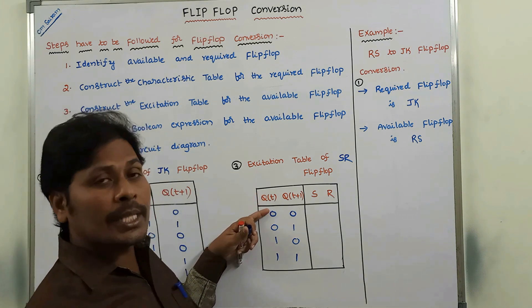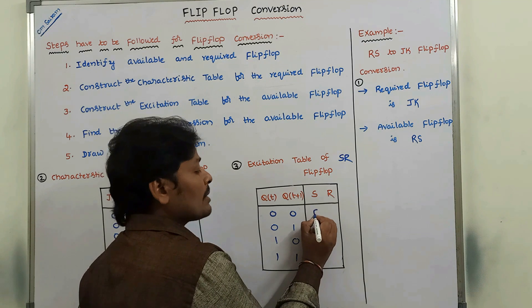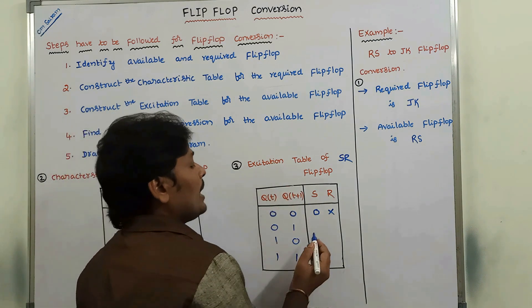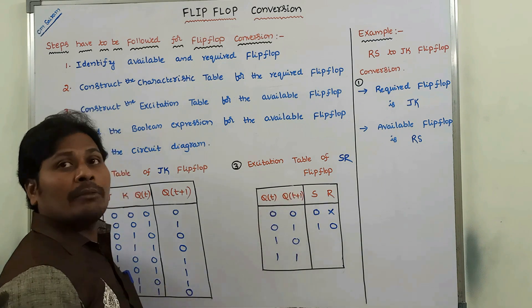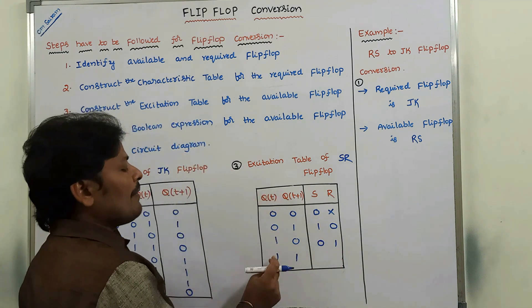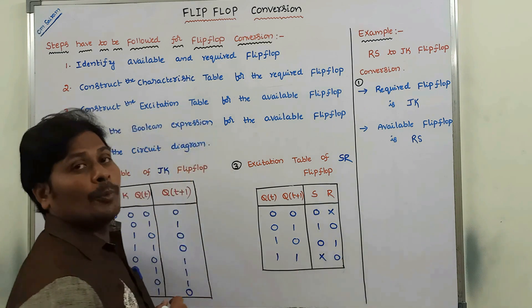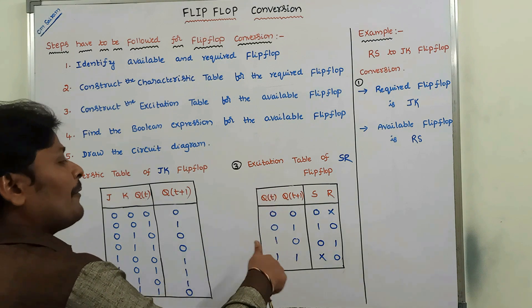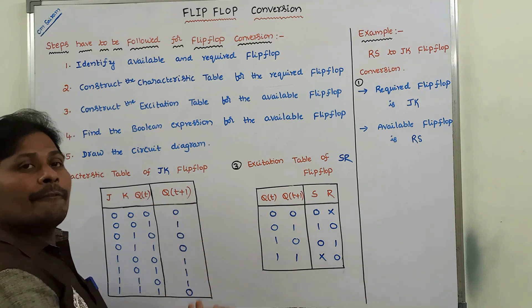Whenever Q(t)=0 and Q(t+1)=0, S=0 and R=0. When Q(t)=0 and Q(t+1)=1, S=1 and R=0. When Q(t)=1 and Q(t+1)=0, S=0 and R=1. This is the excitation table of SR flip-flop. If anybody wants a clear explanation, please refer to the previous videos.